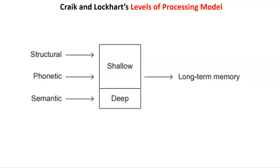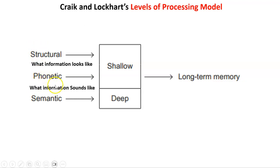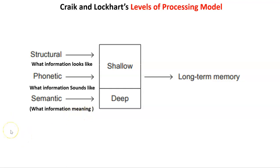The two shallow ways are structural and phonetic. Structural basically refers to what information looks like — when we see something, what it looks like — and this is considered a shallow way of processing. Phonetic refers to what information sounds like. Finally, semantic is considered a deep way to process information, and this basically refers to what information means. So if we understand the meaning of information, it's more likely we will process it deeply, and therefore more likely it will be stored in our long-term memory.